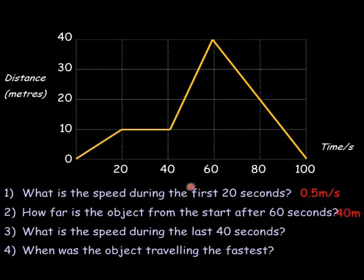The third question, what's the speed during the last 40 seconds? Make sure that you're taking the change in distance, so it's going from 60 to 100 in a time of 40 seconds. So it's 40 metres in 40 seconds. So the answer is 1 metre per second.